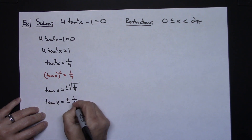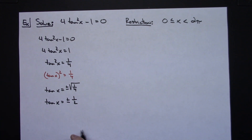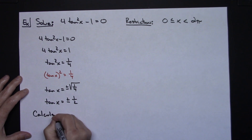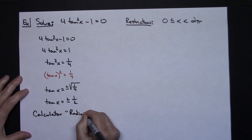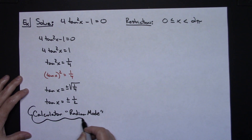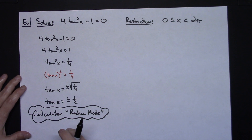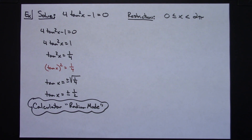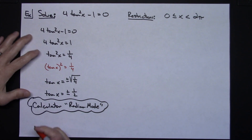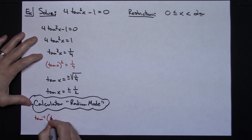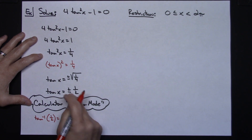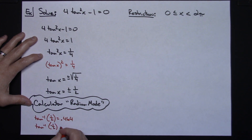Since ±1/2 is not on the unit circle, we'll use a calculator — make sure it's in radian mode. Using inverse tangent: tan⁻¹(1/2) ≈ 0.464, and tan⁻¹(−1/2) ≈ −0.464.